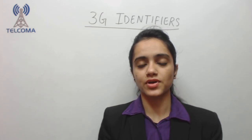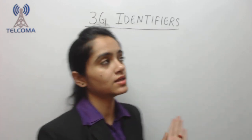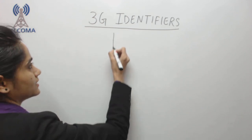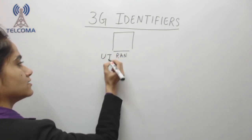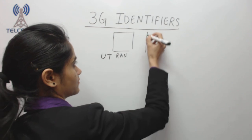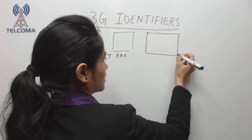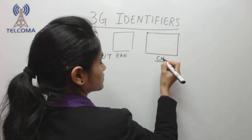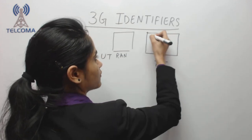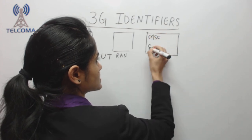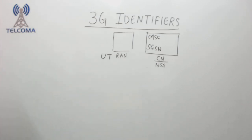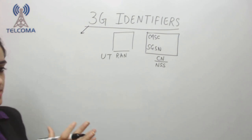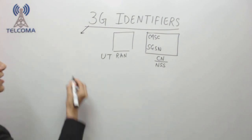Hello and welcome to this class on third generation identifiers. As we know, 3G has a RAN part called UTRAN — Universal Terrestrial Radio Access Network — and a core network. In the core network MSC handles call processing and SGSN handles data. Our topic is identifiers, and 3G works on identifiers from GSM as well as GPRS, using both.